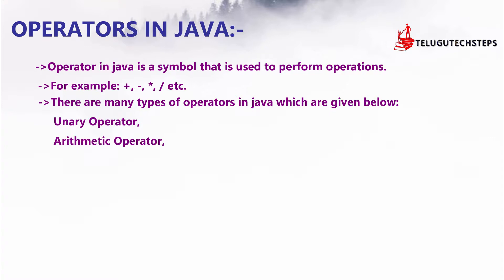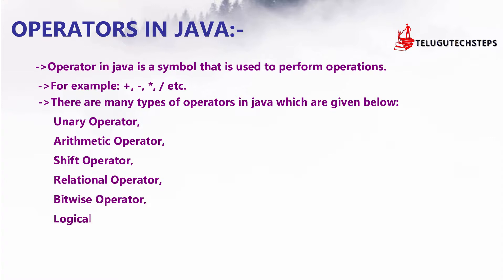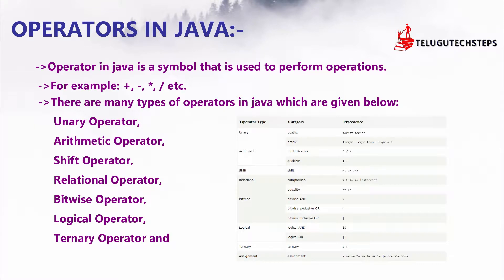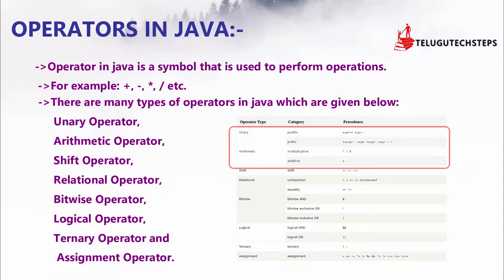The types of Java operators are: unary operators, arithmetic operators, shift operators, relational operators, bitwise operators, logical operators, ternary operators, and assignment operators. We use Shift, Relational, Bitwise, Logical, Ternary, and Assignment operators regularly.